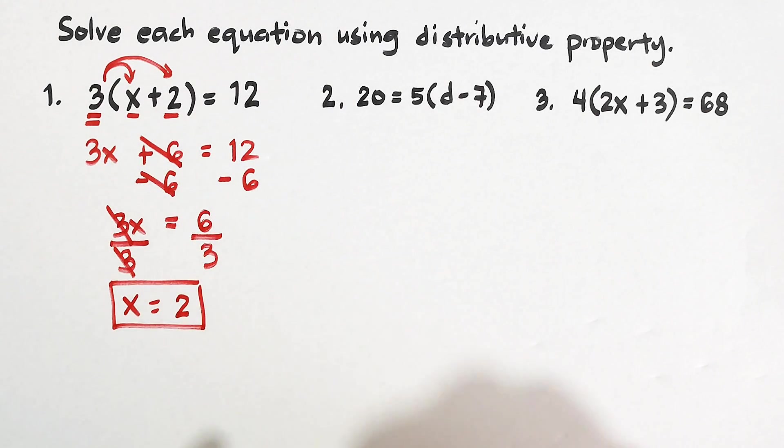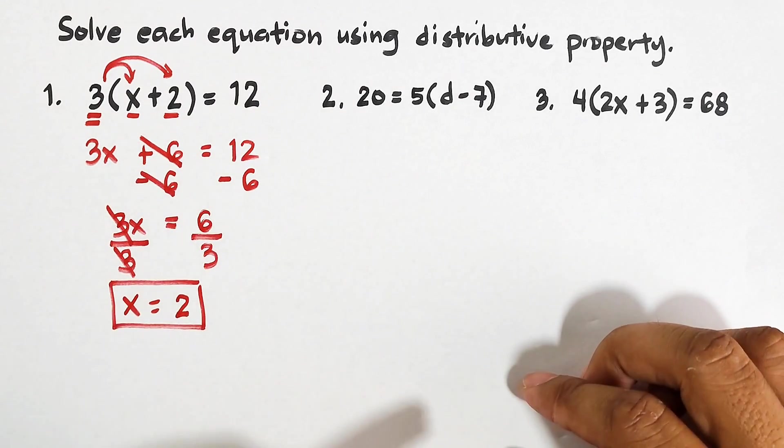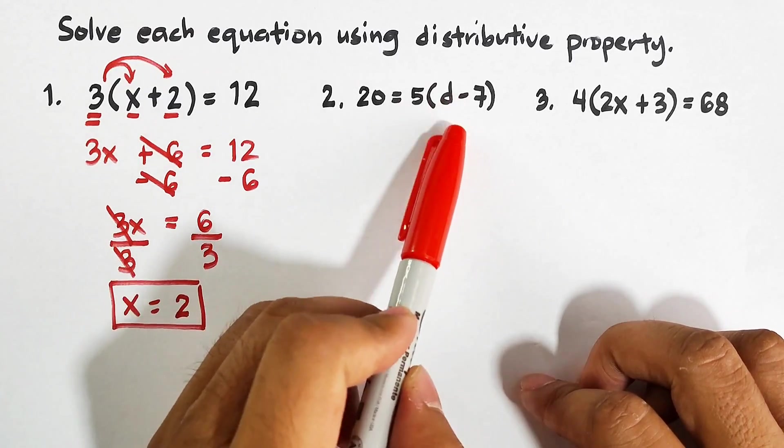Now if you want to check whether your answer is correct, you can do the checking on a separate sheet of paper. Let's move on with item number two. In number two, the variable here is letter d.